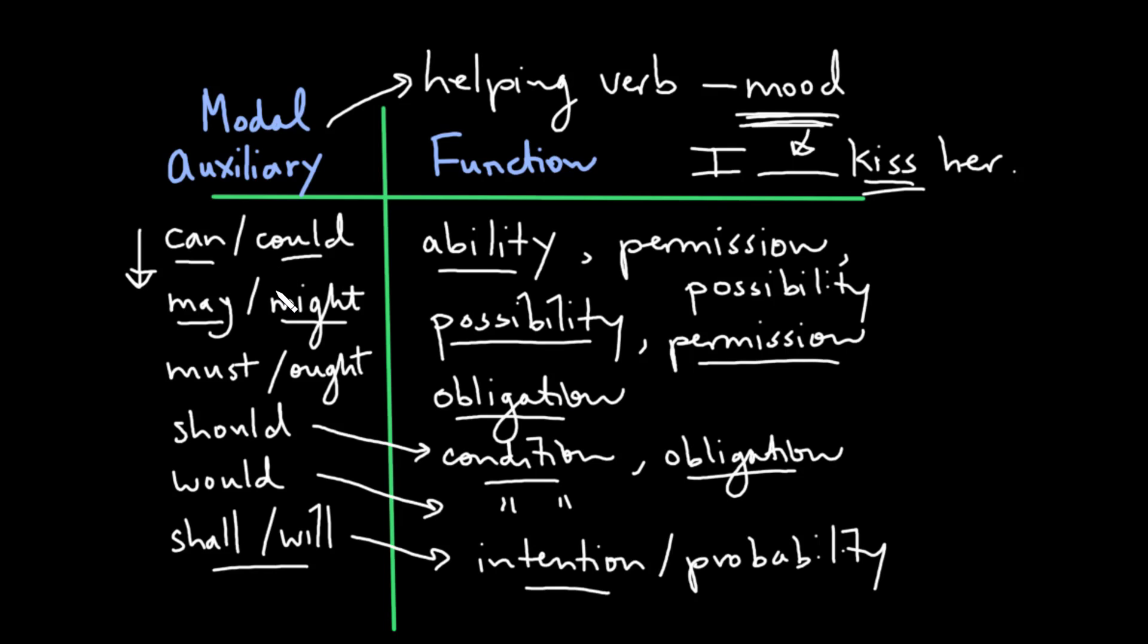So just to summarize then, modal auxiliaries, they change the mood, they affect the manner of the verb, and as you can see here, they don't actually change their form. They will stay the same no matter what the tense. The difficulty is not in spotting them so much, but as it is really in trying to figure out what kind of mood they express.